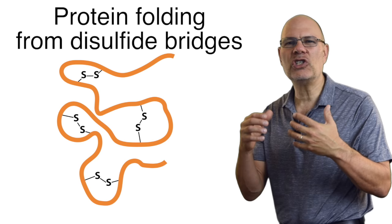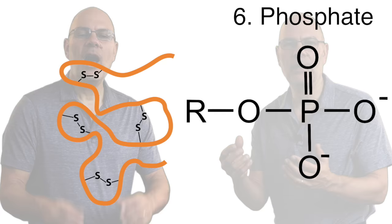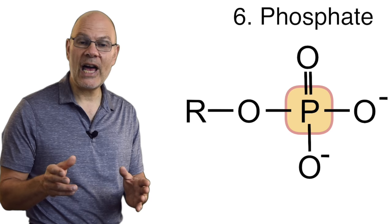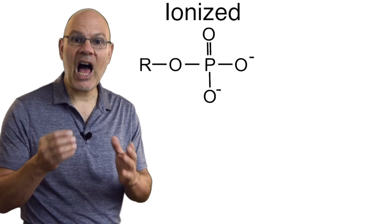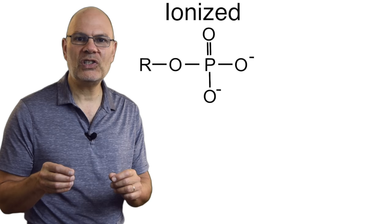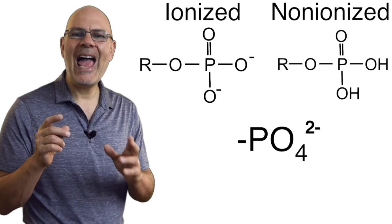A phosphate group is a negatively charged ion that consists of one phosphorus atom surrounded by four oxygen atoms. Phosphate groups make molecules acidic. You should be able to identify this ionized form of a phosphate group, which is what's found in cells, this non-ionized form, which you might find in a textbook or on a test, and phosphate's chemical formula, PO4.